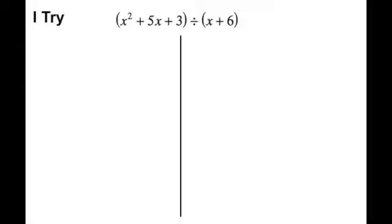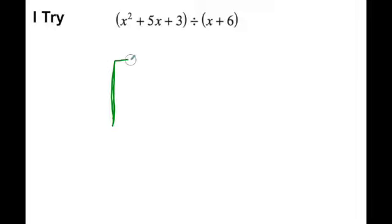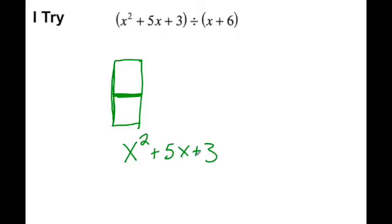Let's take a look at one that I'm going to do using just the box method. I'm going to draw the line to begin the box, starting with a one-by-two box because I might not know the dimensions I need. I need to fit x squared plus 5x plus 3 in the box, and I know that one of the sides is going to be x plus 6. Let's figure out the setup.